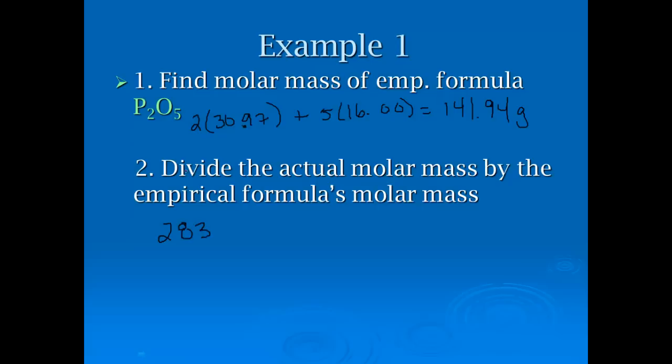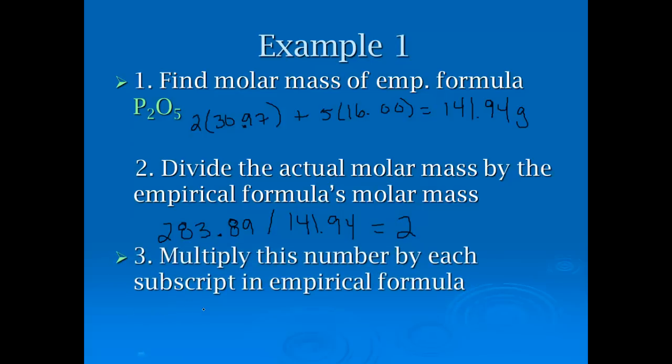I have to divide the actual molar mass by the empirical formula's molar mass. You always have to divide the larger number by the smaller number. 283.89 divided by 141.94, we're looking for a whole number here. This is going to come out to be 2. Then all I have to do is multiply this number by each subscript in the empirical formula. My empirical formula was P2O5, so I have to multiply everything in that formula by 2. My molecular formula for this compound is P4O10, or tetraphosphorus decoxide.